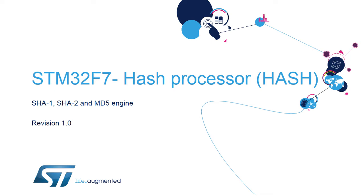Welcome to this presentation of the STM32F7 Hash Processor. The hash peripheral is in charge of efficient computing of the message digest. A digest is a fixed-length value computed from an input message. A digest is unique — it is virtually impossible to find two messages with the same digest, and the original message cannot be retrieved from its digest. Hash digests and Hash-Based Message Authentication Code, or HMAC, are widely used in communication to guarantee the integrity and authentication of a transfer.